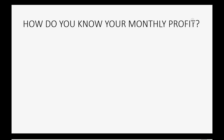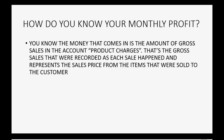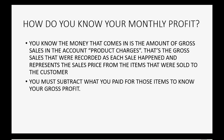How do you know your monthly profit from your Amazon online store? The money that comes in is the amount of gross sales that goes into the account that Amazon calls 'product charges' — that's the gross sales recorded as each sale happened, representing the sales price from items sold to your customers. You must subtract what you paid for those items in order to know your gross profit.